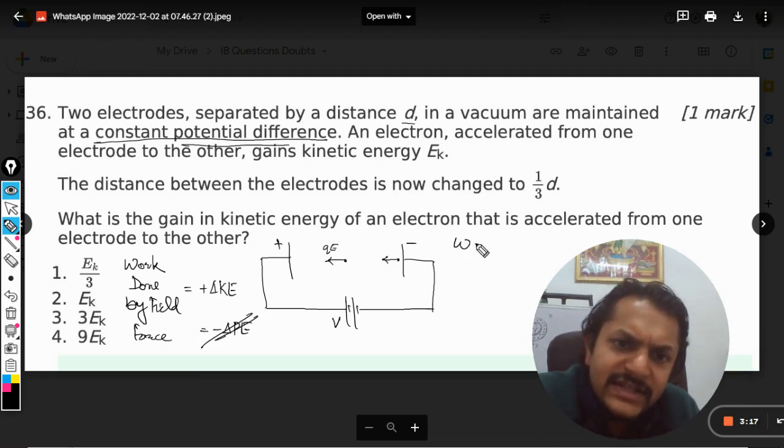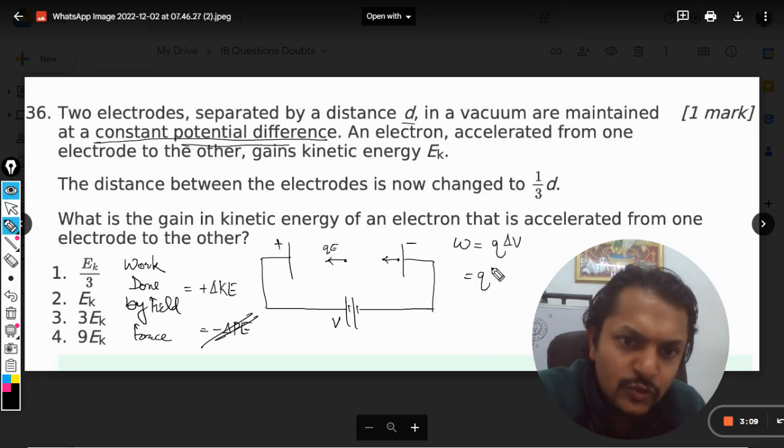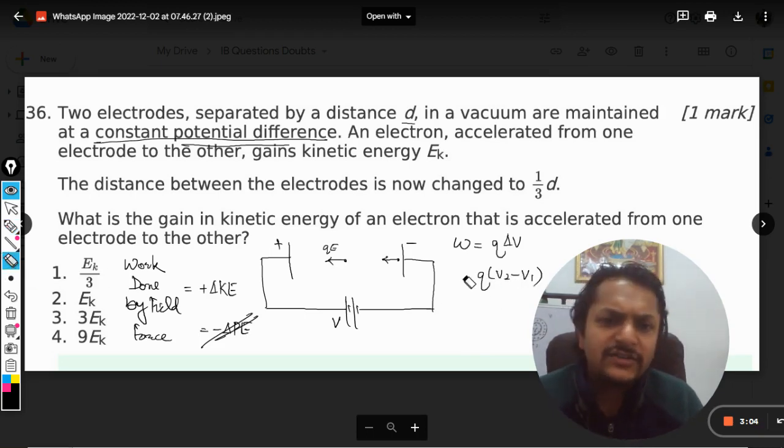first of all, what is the expression for the electric work? That we know is given by q into delta V, so it is q into V2 minus V1. You can write it as q delta V.